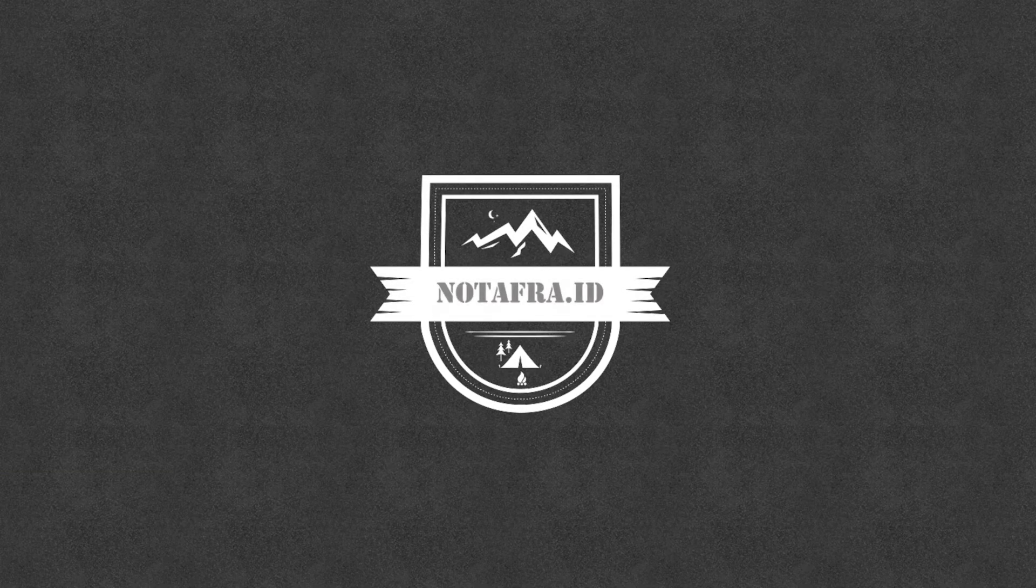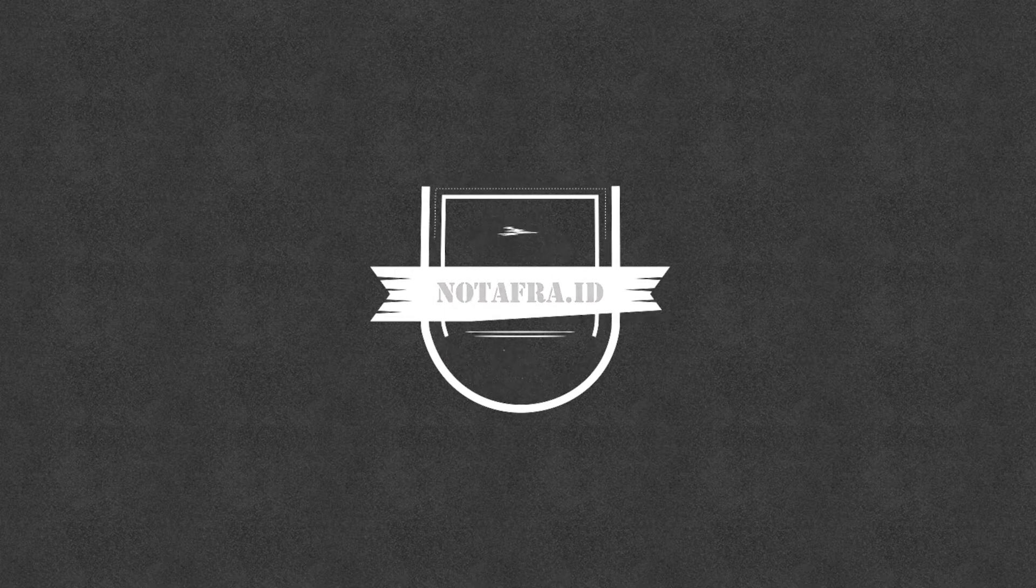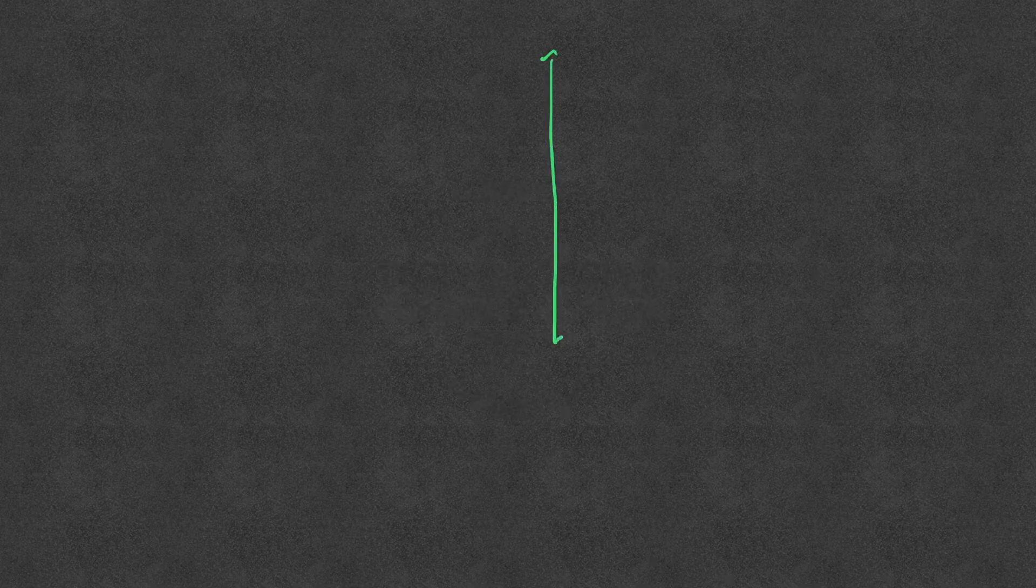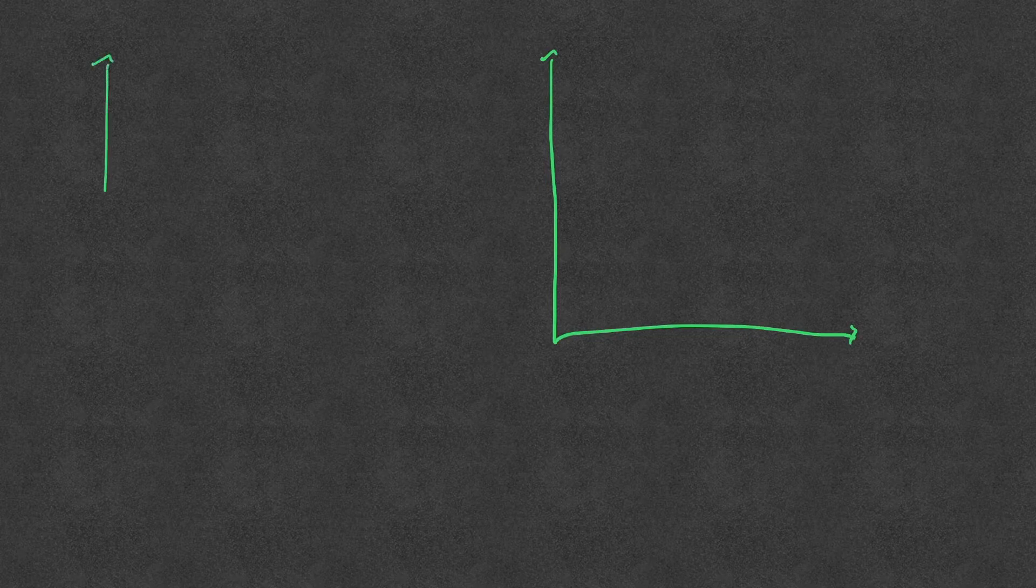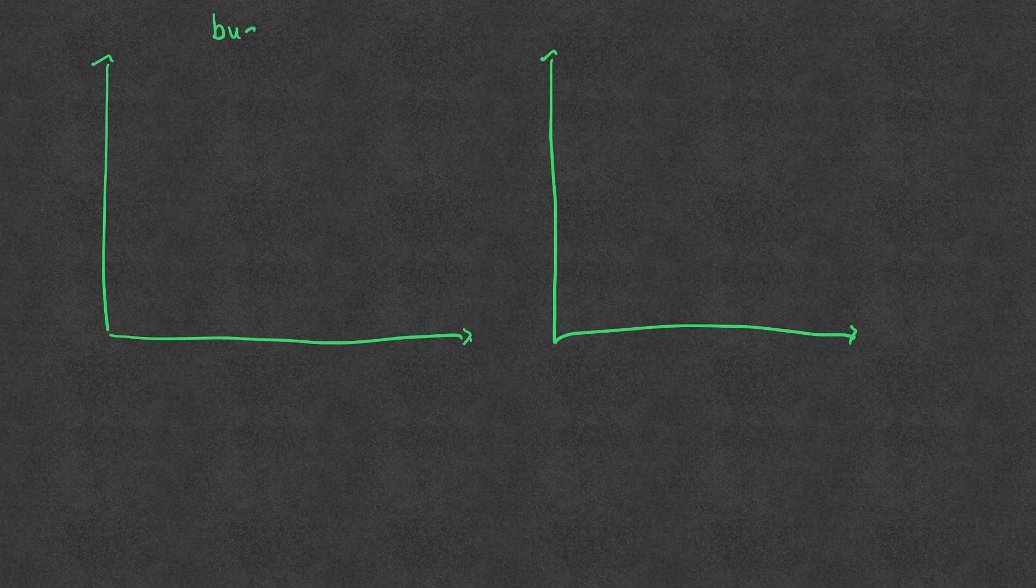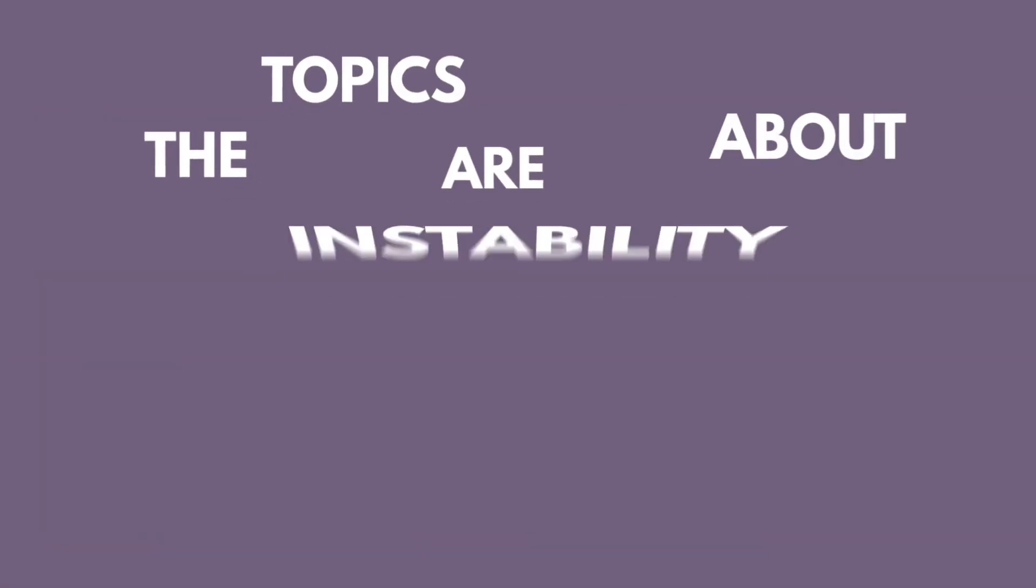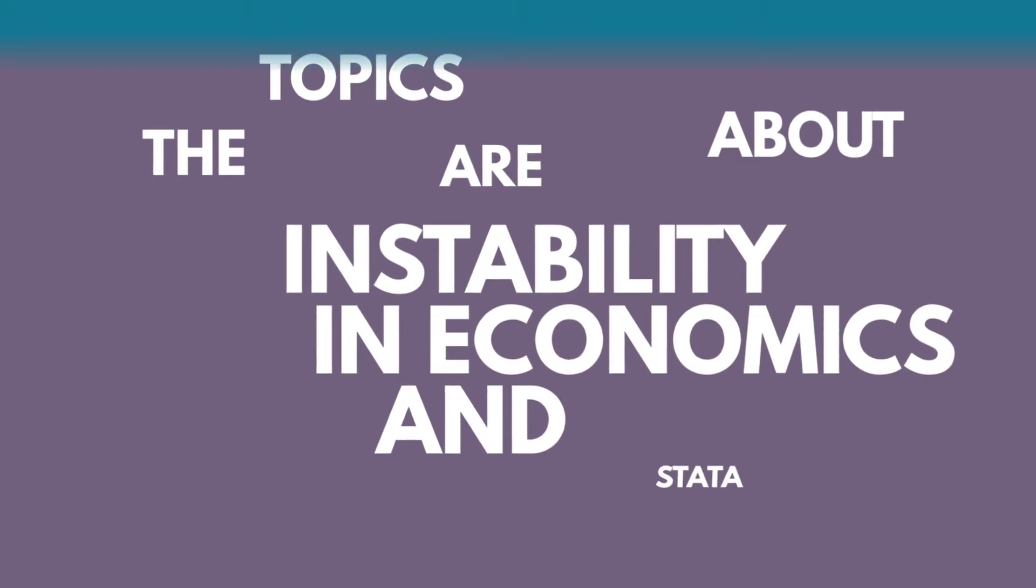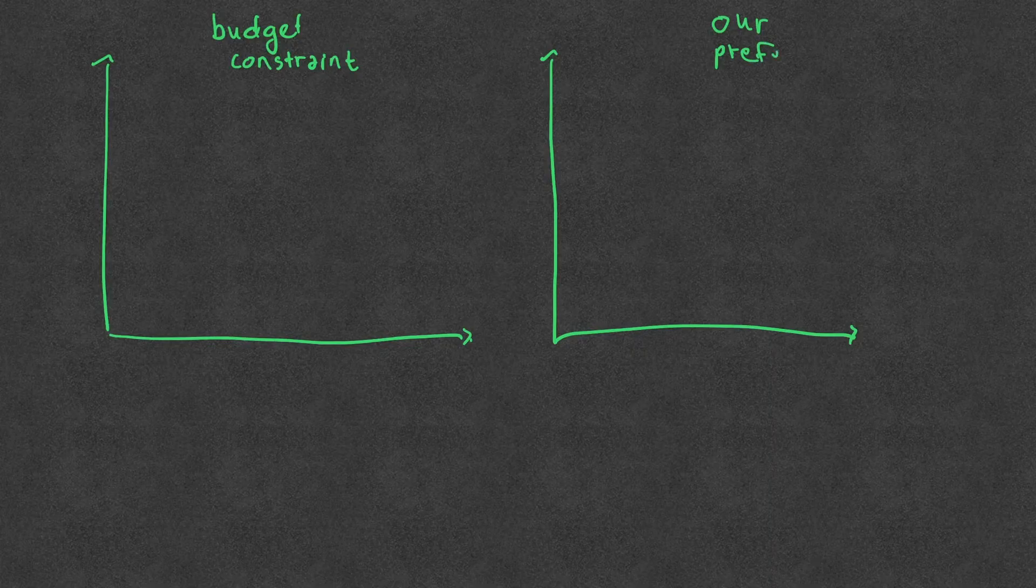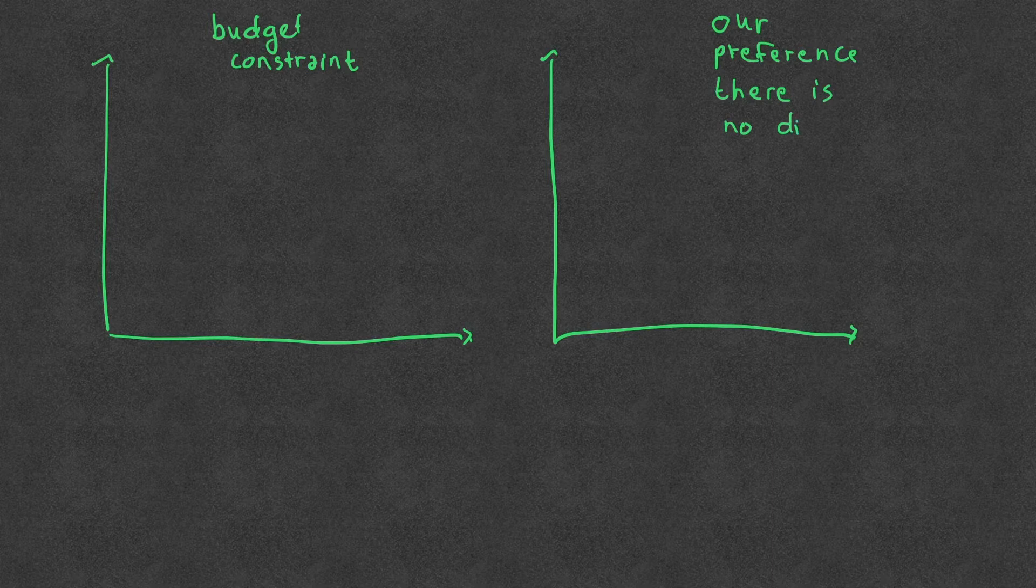Alright, so we already talked before that there are two lines that we know. It's connected with our budget constraint, which means the amount of money that we have could buy. And this is about our preferences, and we call it the indifference curve.